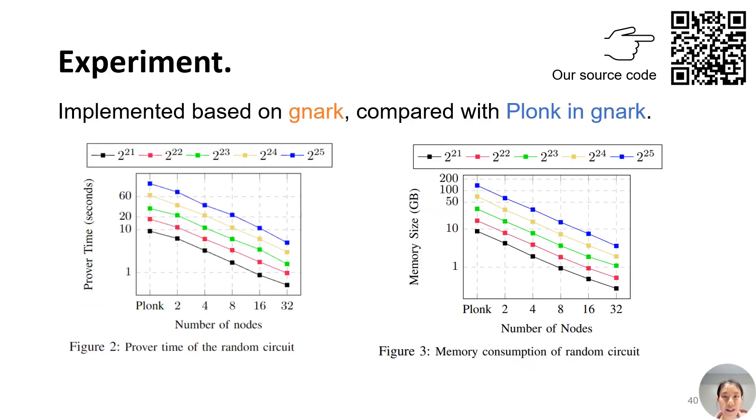We have shown the theoretical benefit compared with Plonk, and here are the evaluations of our implementation in practice. Our protocol is implemented based on the Plonk implementation in the gnark library. When fixing the size of the circuit, we can observe that as the number of nodes increases, both the proving time and memory usage are reduced proportionally. This is true even when the number of nodes is small, showing that our method introduces little overhead in the distributed setting.